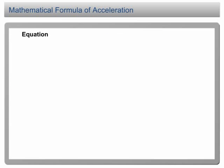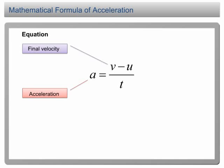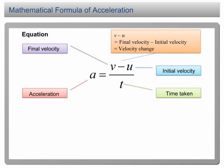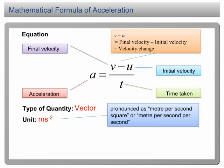Mathematical Formula of Acceleration. The equation of acceleration is a equals v minus u over t, where a is acceleration, v is final velocity, u is initial velocity, and t is time taken for the velocity change. Take note that v minus u is actually the velocity change. Acceleration is a vector quantity. The SI unit is ms⁻², pronounced as meter per second squared or meter per second per second. In the very next slide, we will show how this equation is used to solve a motion problem.